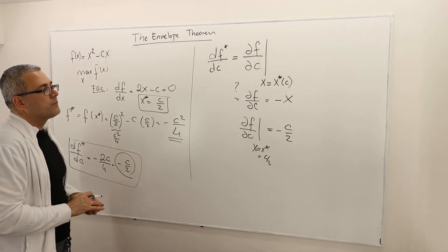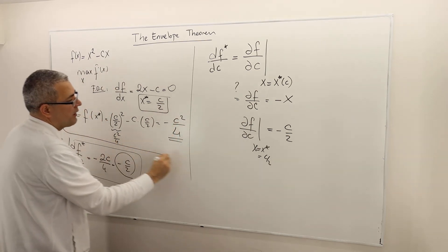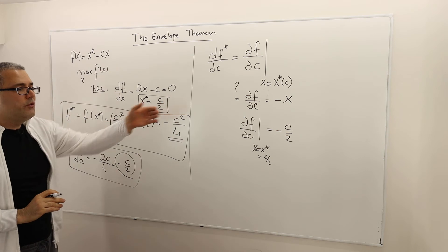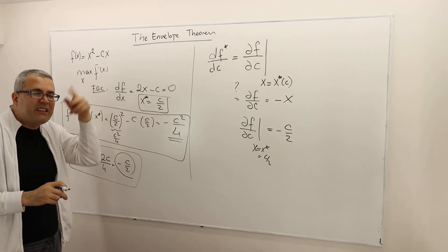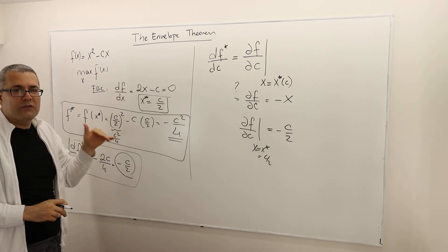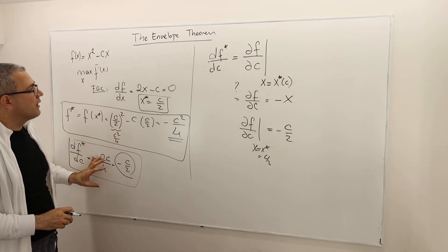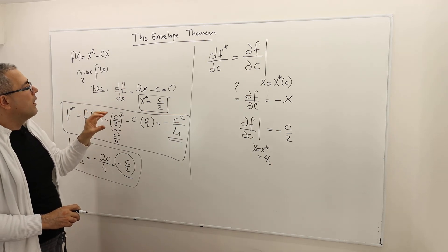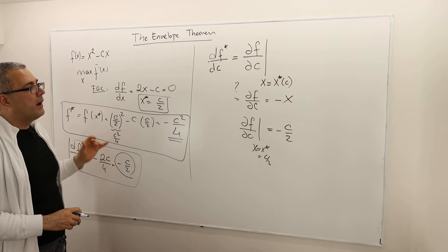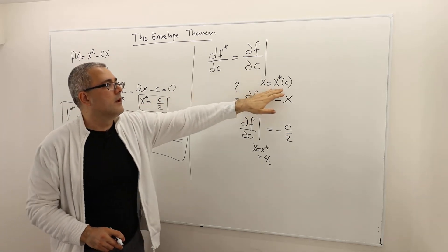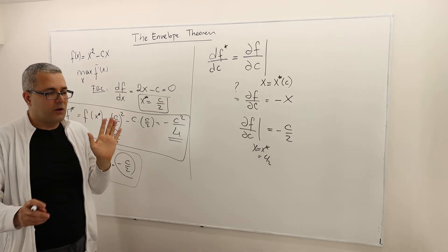The envelope theorem basically helps you skip some steps. It says you do not really need to explicitly calculate the indirect utility function. You can get the same result directly from your objective function, evaluated at the optimal solution. Obviously, you still have to find the optimal solution for your objective function.